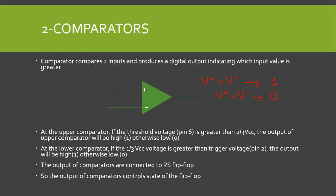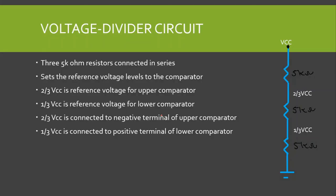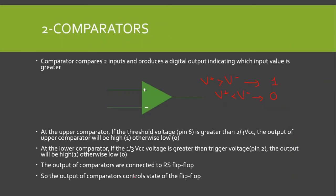The outputs of the comparators are connected to the RS flip-flop, and the state of the flip-flop is controlled by the output of these comparators. So we have discussed the voltage divider circuit and the two comparators.